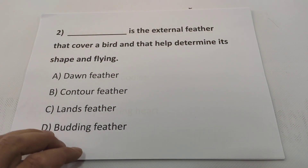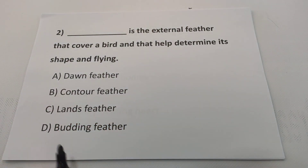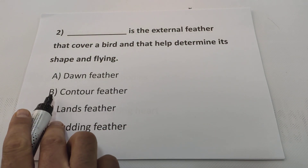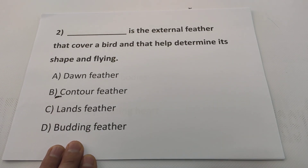Question two: what is the external feather that covers a bird and helps determine its shape and flying? This one, students — it is going to be contour feather. Contour feather. So the answer will be B.